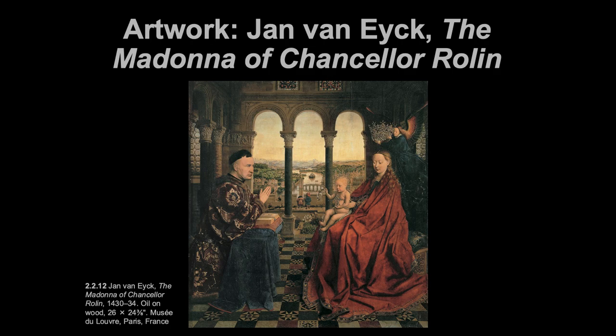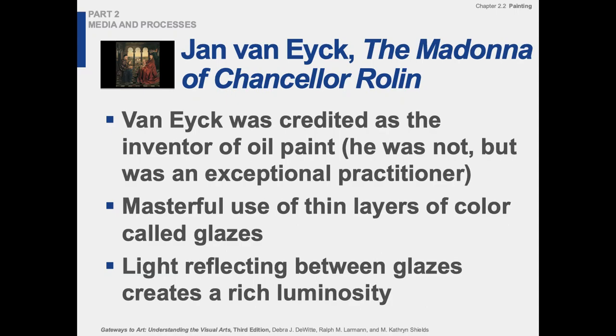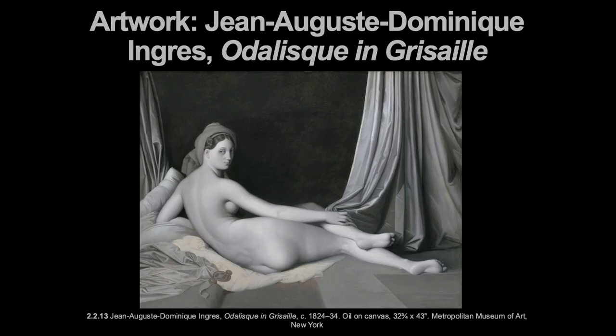Da Vinci really loved his glazes. In his case it was called sfumato — it looks like smoke almost, where it's almost dusky. If you look at the Mona Lisa later in our book, you'll see the smokiness we're talking about. But there are some glazes here probably to bring the flesh tones down a little bit or to make the painting look unified. He has a masterful use of glazes.